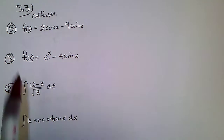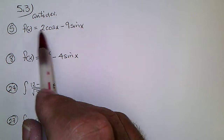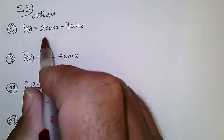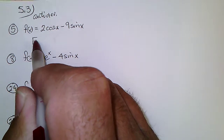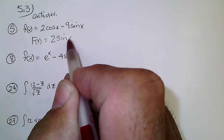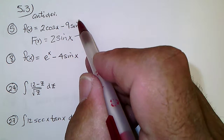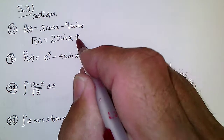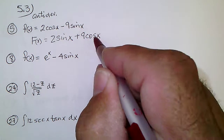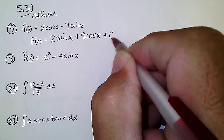Problem 5.3: f of x is equal to this, and we're supposed to find the antiderivative. The derivative of sine is cosine, so capital F of x would be 2 sine x minus, and since the derivative of cosine is negative sine and this has the negative, this must have been 9 cosine x, because the derivative of cosine is negative sine, plus C.